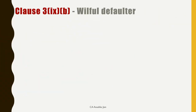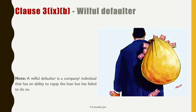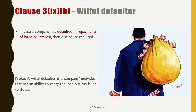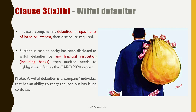Next new clause is 9. It deals with willful defaulters. A willful defaulter is a company or individual that has the ability to repay the loan but has failed to do so — for example, Vijay Mallya. Agar company ne loans ya interest repayment mein default kiya hai to the auditor needs to make disclosure in the CARO report. Further, kisi bank ya financial institution ne company ko willful defaulter ghoshit kiya hai to auditor isse bhi CARO 2020 mein highlight karega.